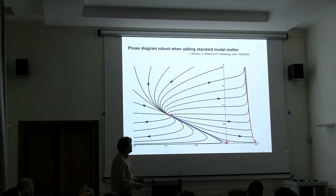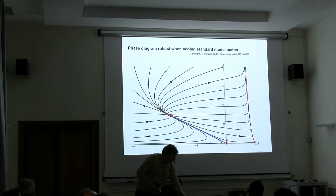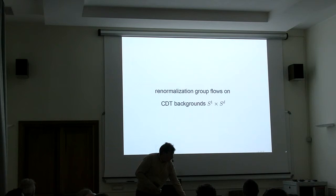This is the same flow diagram; the difference is that here we also included all the matter fields of the standard model. What you see is the non-Gaussian fixed point shifted a little bit. Also, its critical exponent changed from complex to real, but otherwise the structure of the flow is exactly the same that we had before. Asymptotic safety could also be an option for the standard model coupled to gravity.